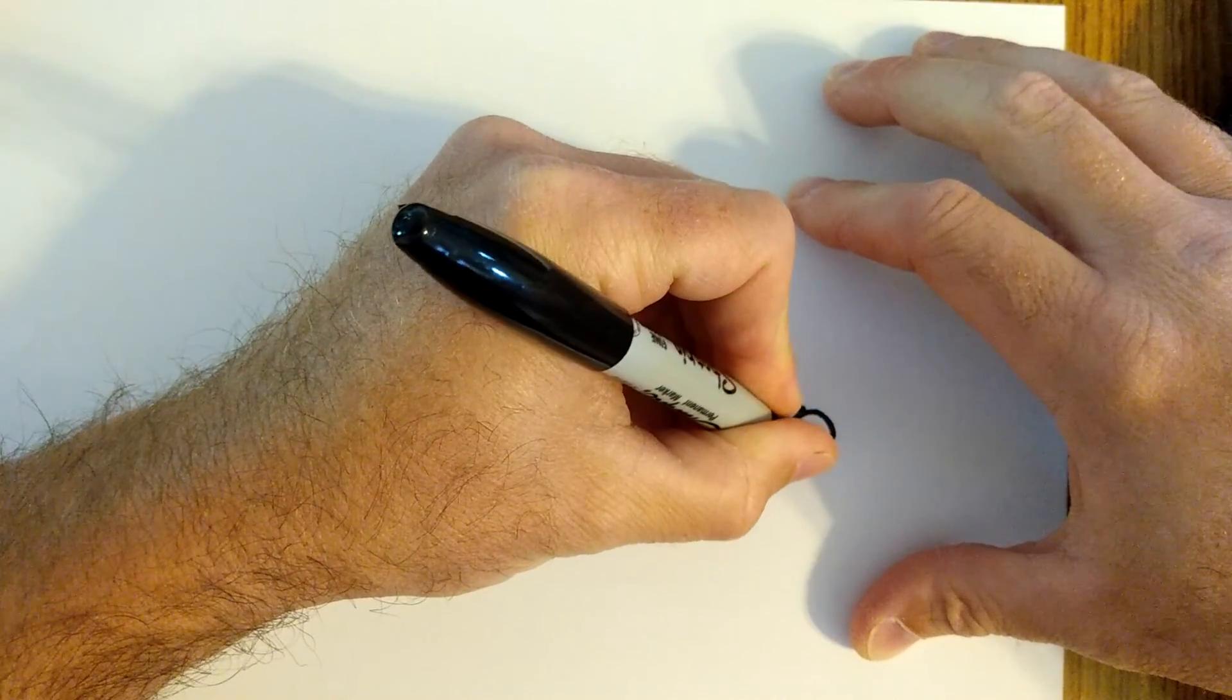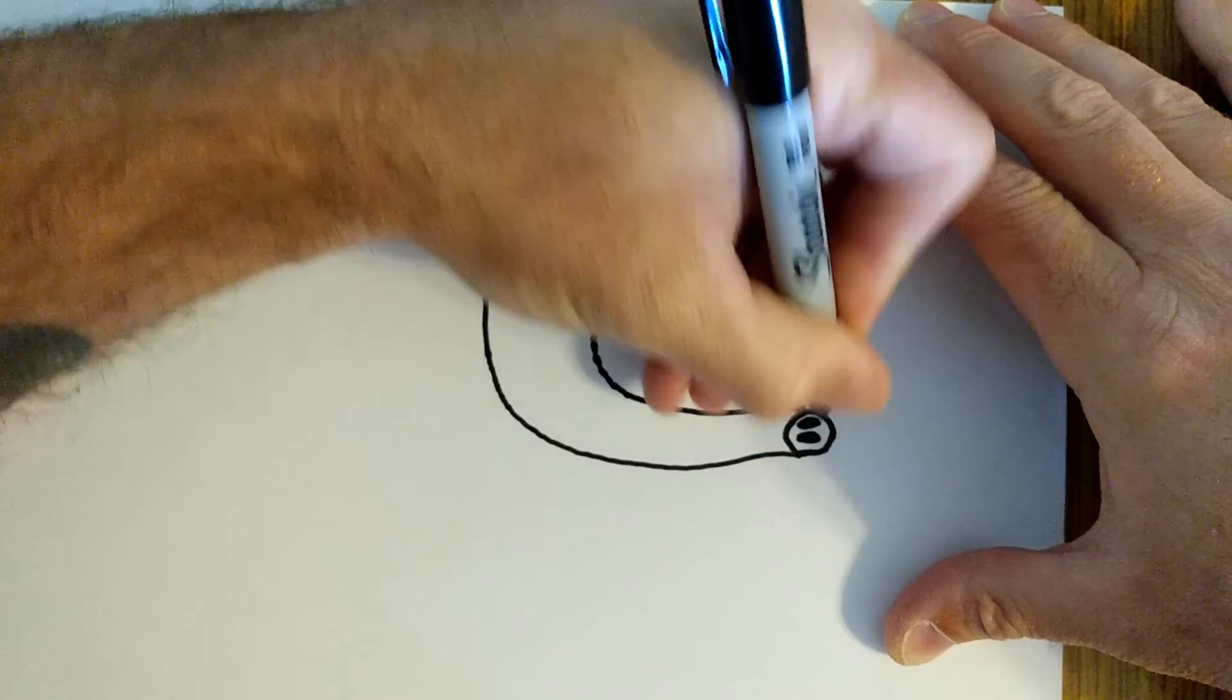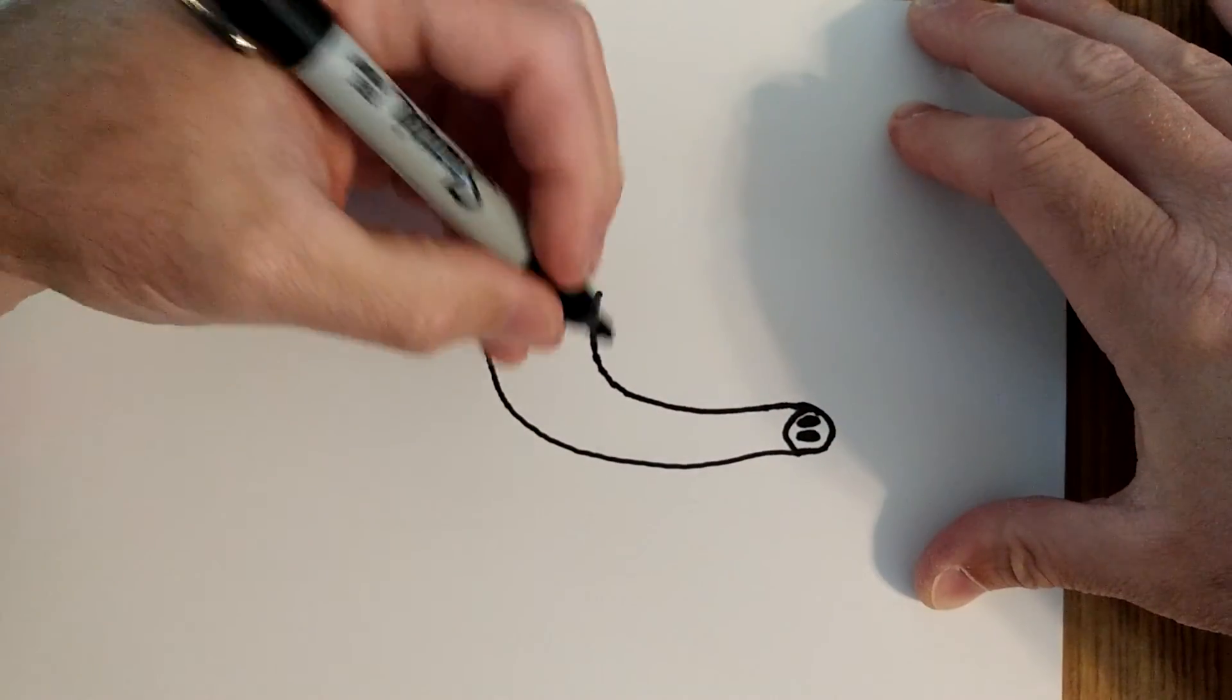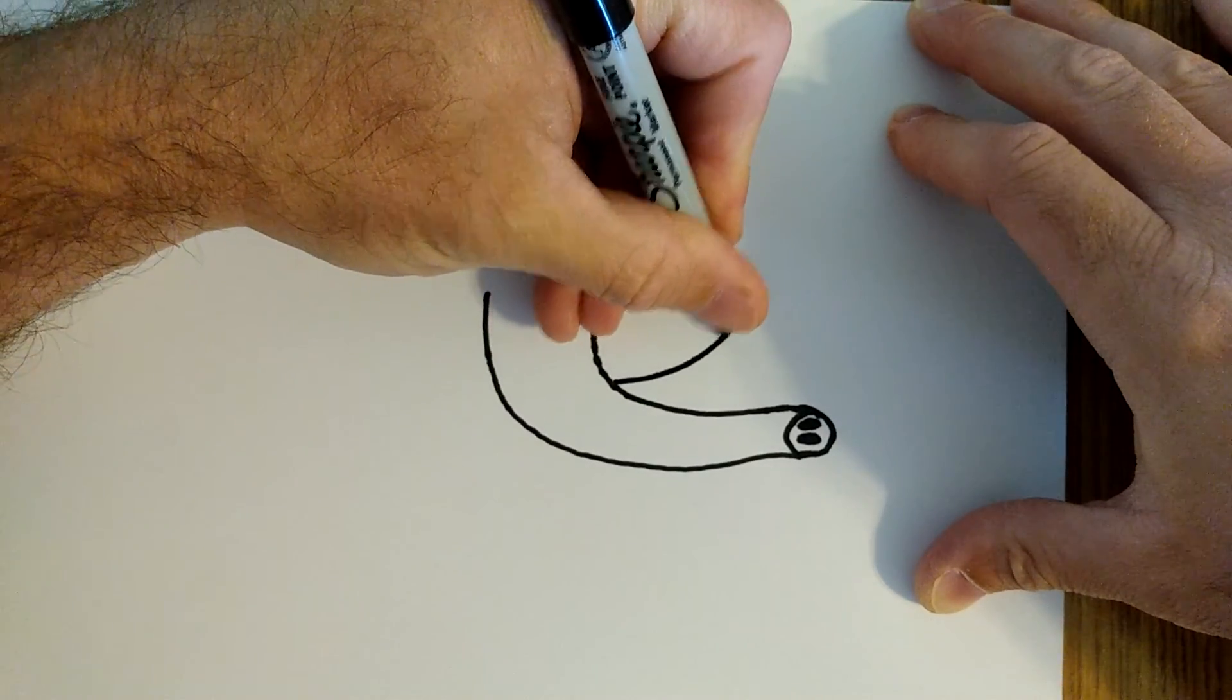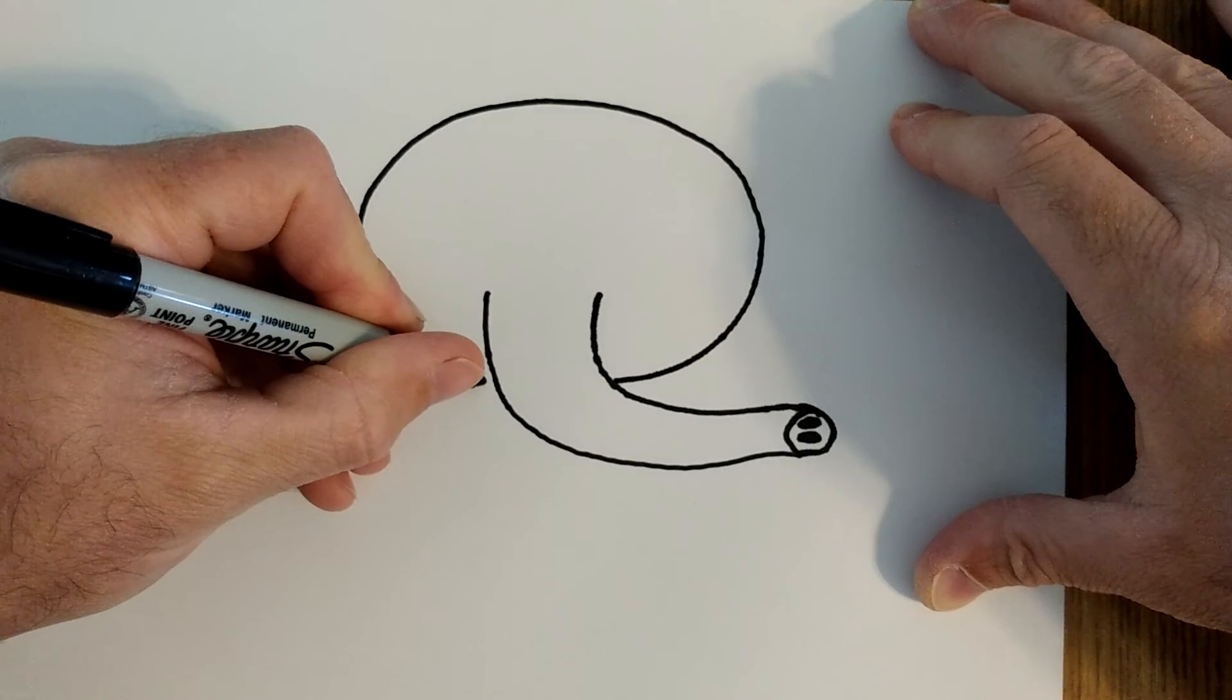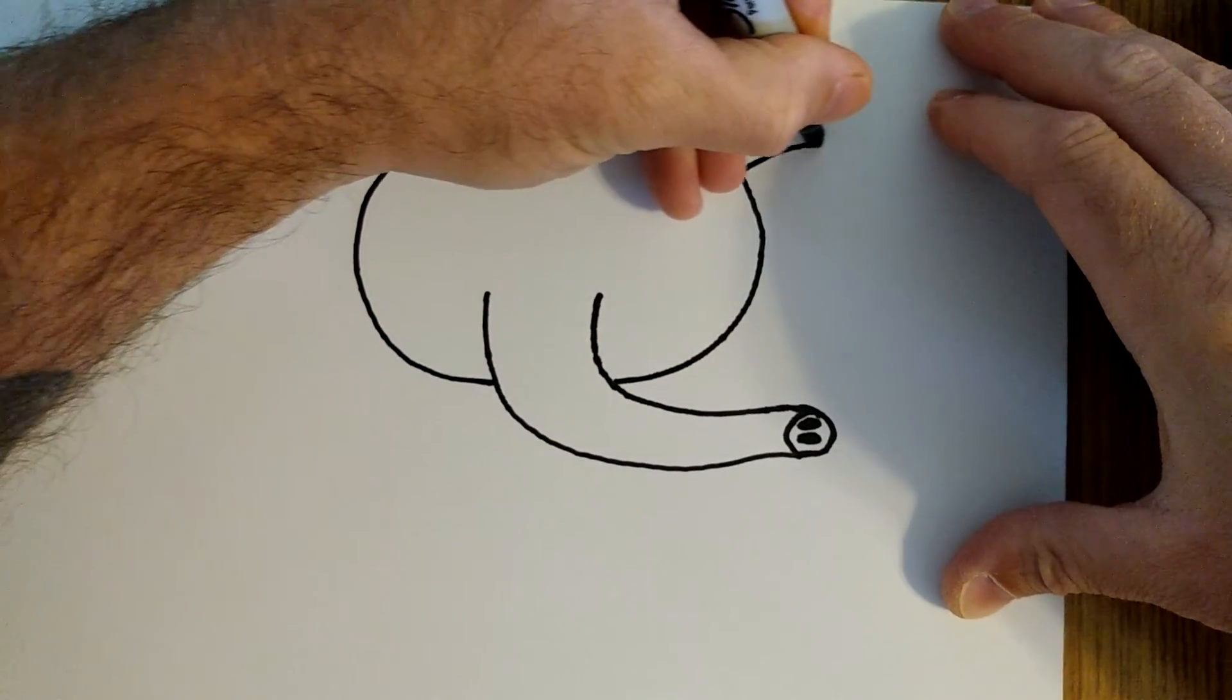On the end we're going to draw an oval with two ovals on the side for the nostrils. Okay, then we're going to start here and we're going to draw a big oval or circle for the head.